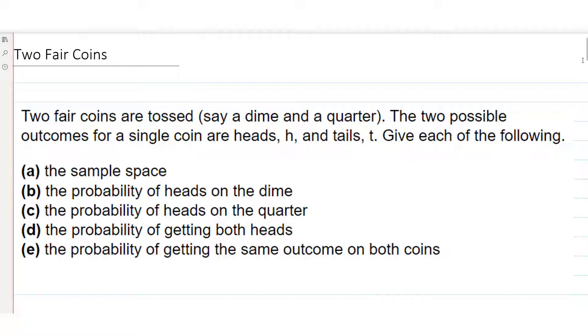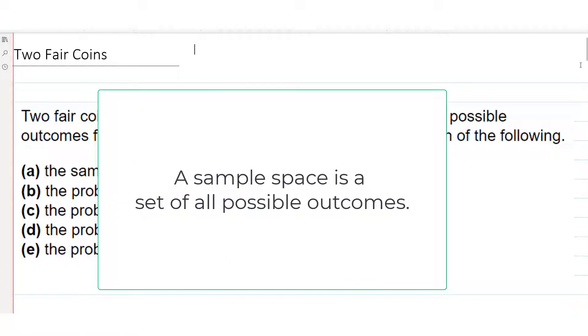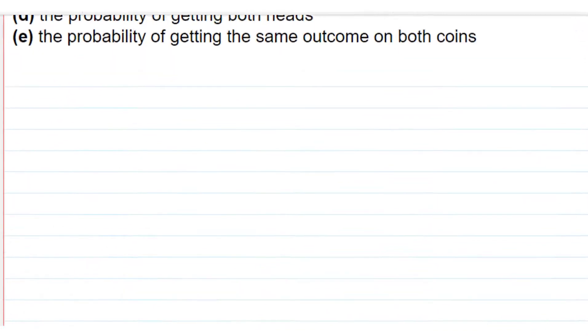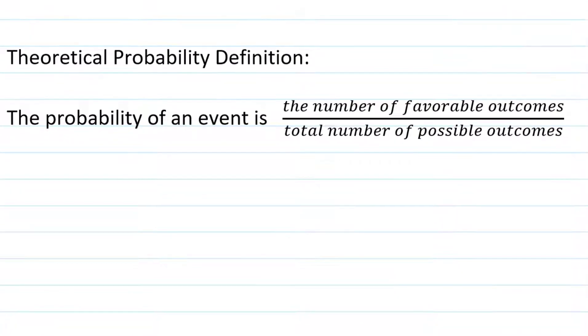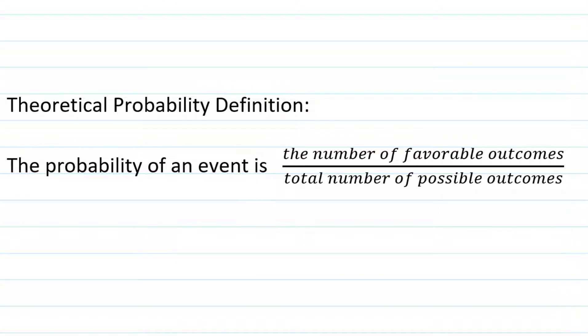Before we can work this problem, we need to understand what a sample space is, which is just a list of all possible outcomes. And we need to know the definition of theoretical probability. This falls into the category of theoretical instead of empirical probability, because this is not a situation where we're going to flip coins a bunch of times and count the number of outcomes and come to a conclusion about the probability that way.